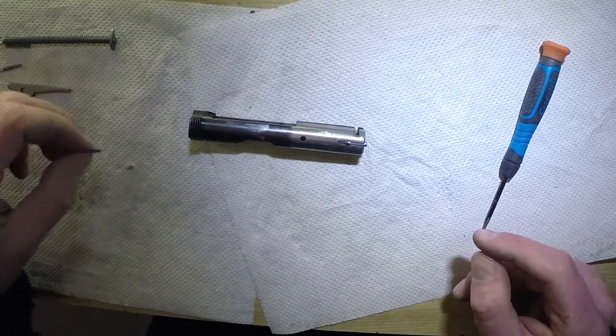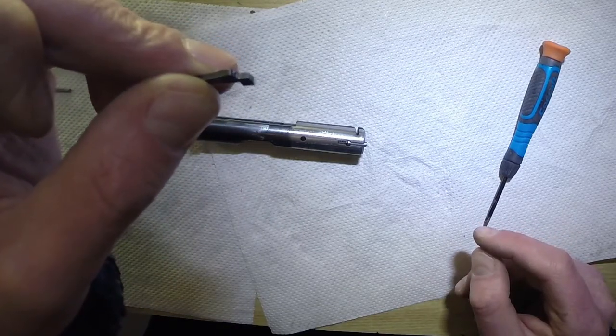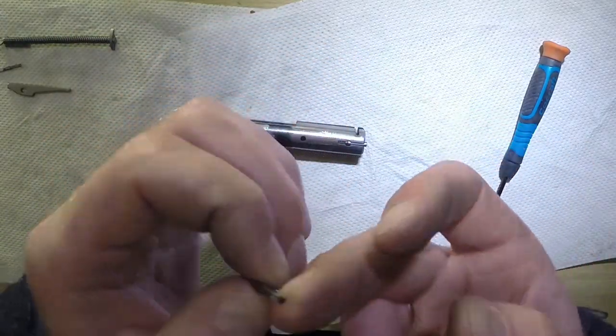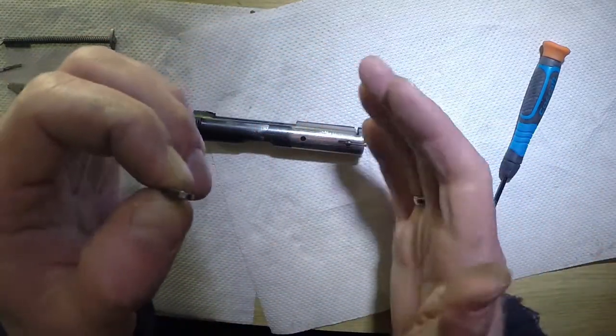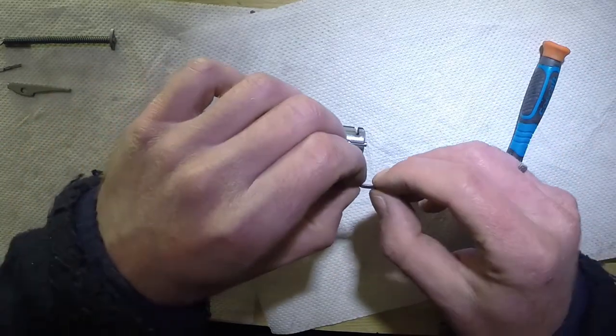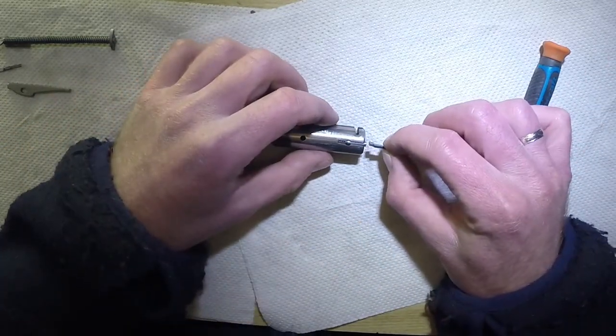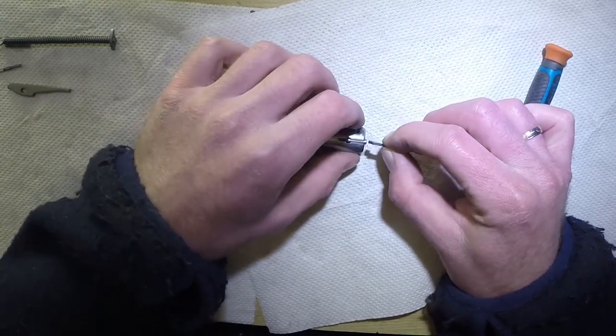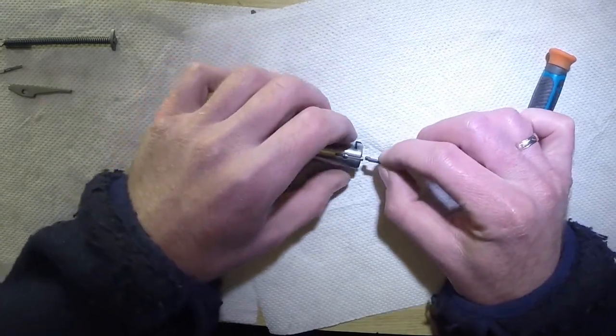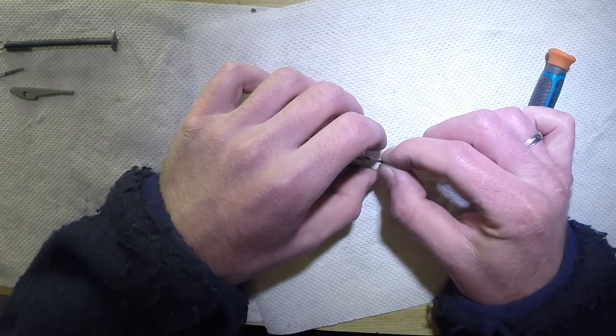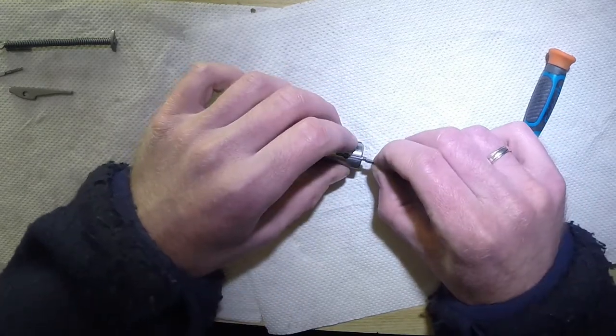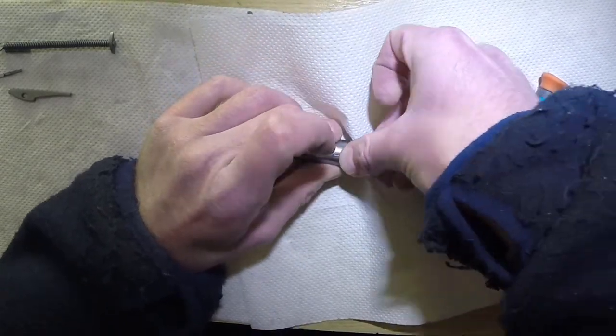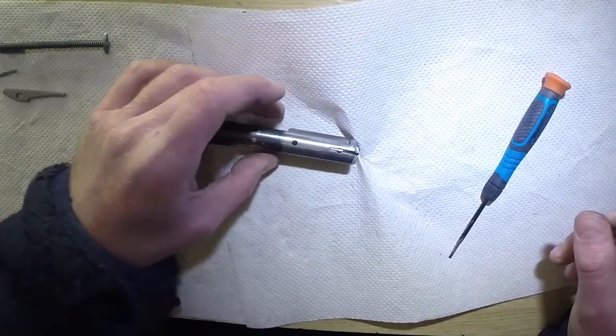Take the extractor. See that square part there? That is supposed to be towards you. The hook part is supposed to be at the right side. You're going to use this. Try and get it as much underneath as possible while you push in as far as you can get it, and it clicks back into place.